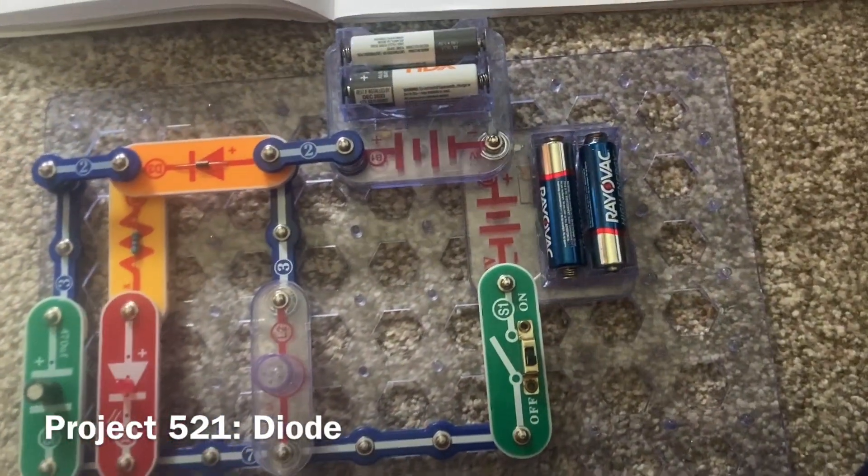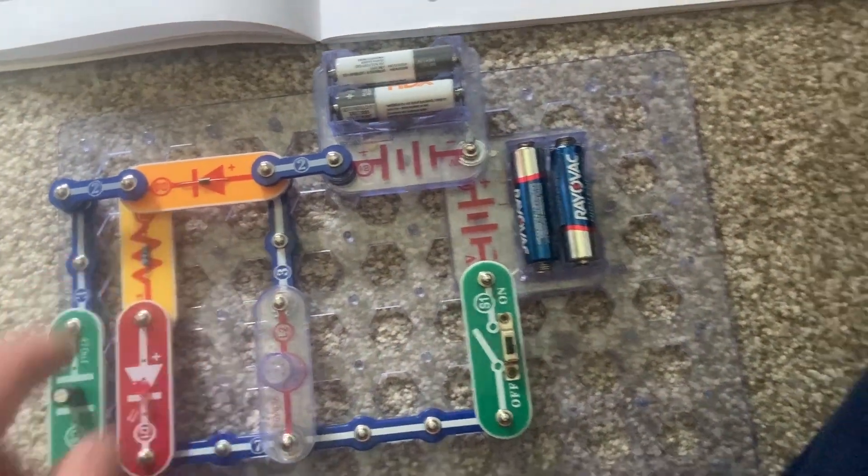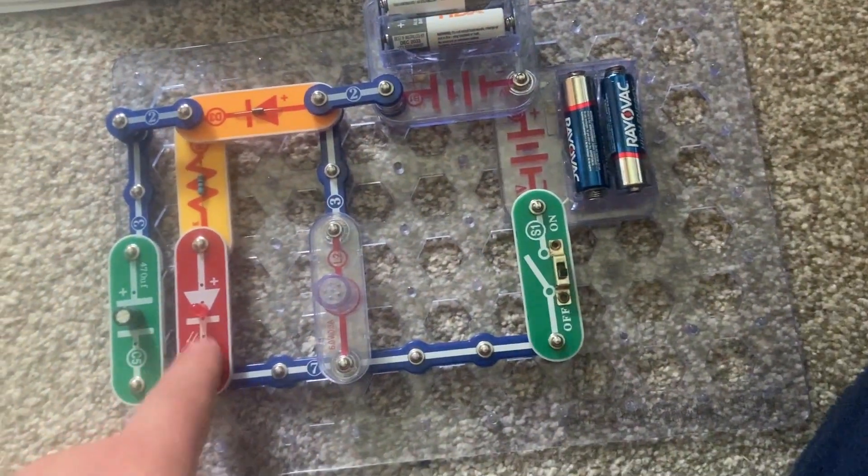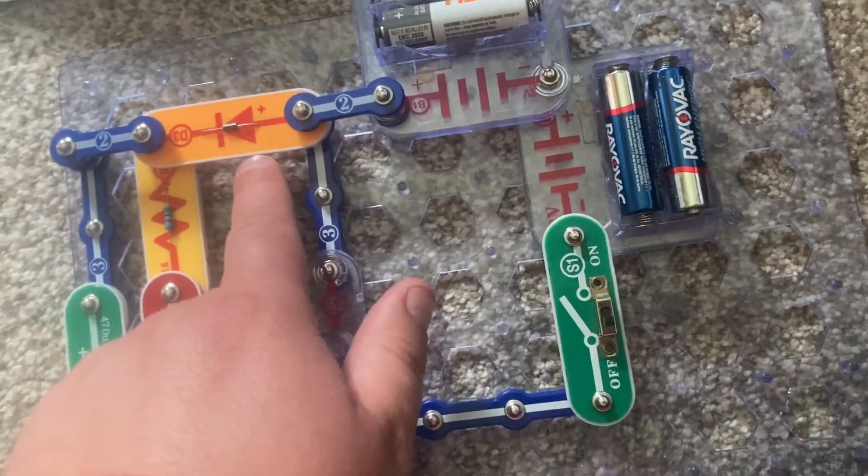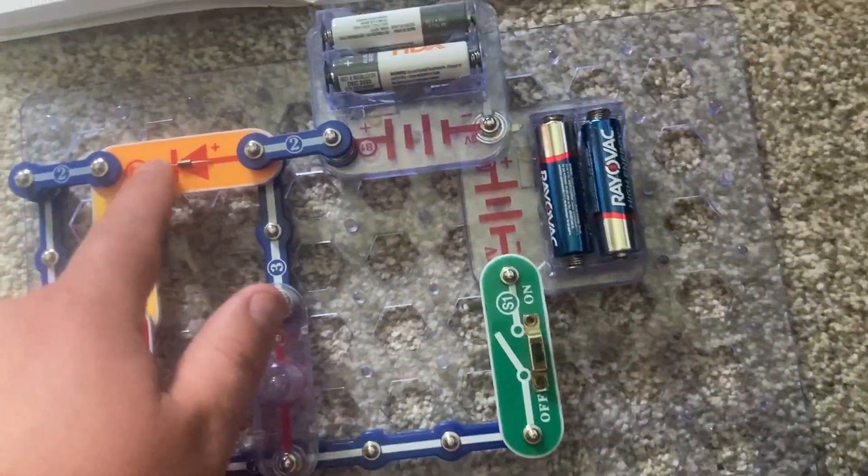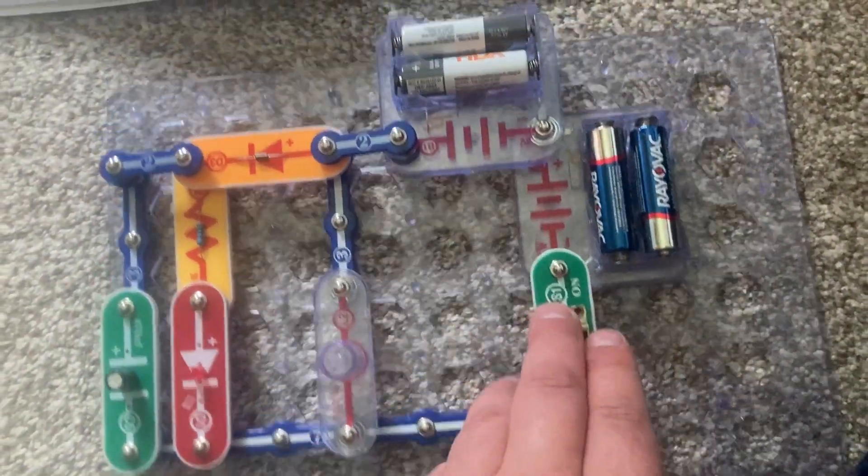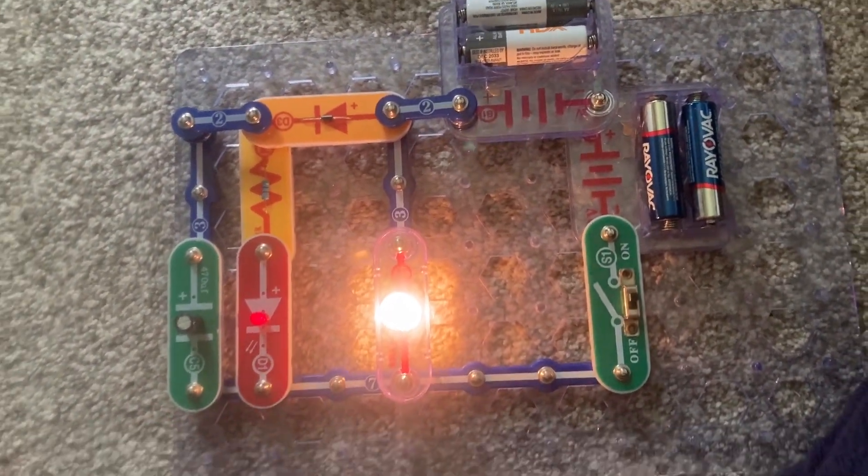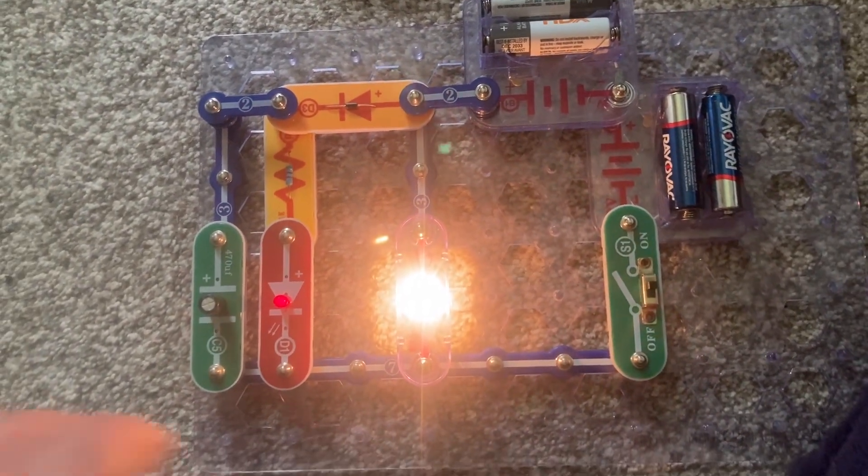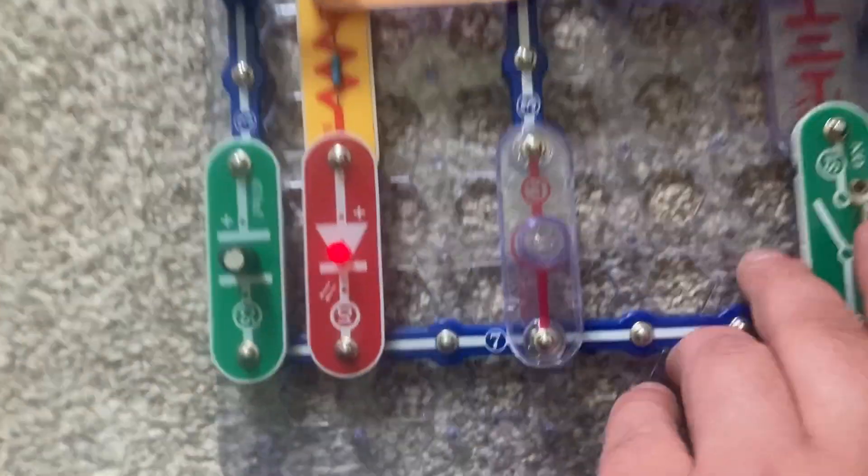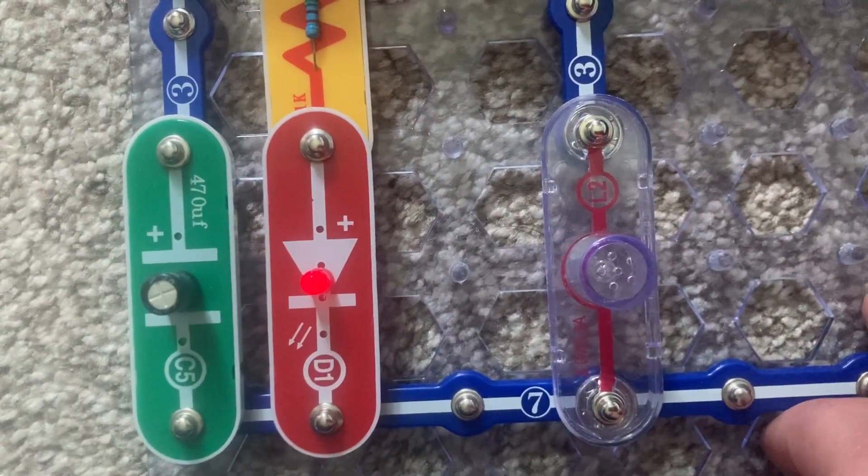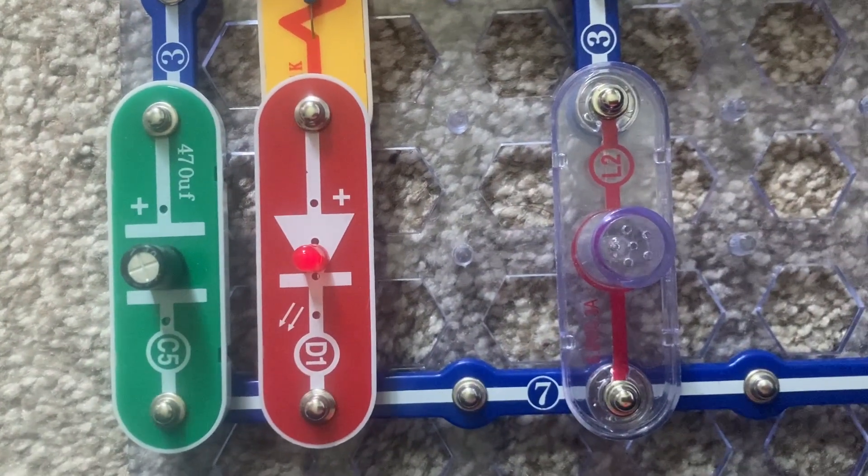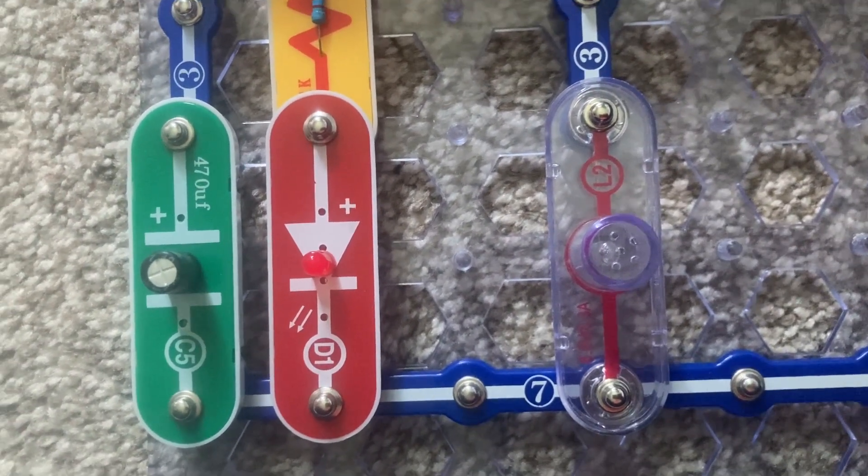This project will show you how a diode works. Now, I have already demonstrated countless projects with light emitting diodes, but this is a diode that only controls the direction in which electricity flows. When I turn on the slide switch, the lamp and red LED both come on, but when I turn off the slide switch, only the lamp goes out right away. The red LED will stay on for a short while until it too goes out.